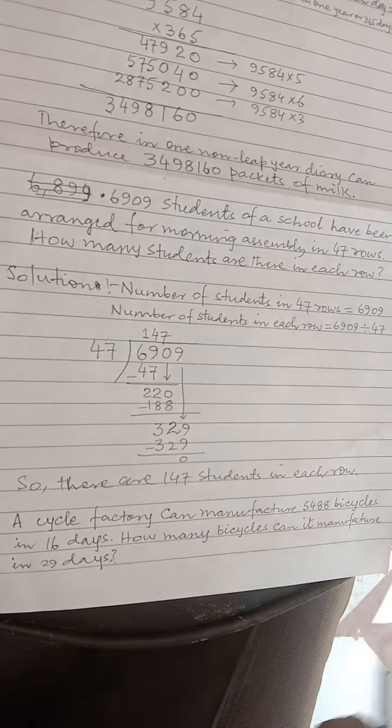A cycle factory can manufacture 5,488 bicycles in 16 days. How many bicycles can it manufacture in 29 days?